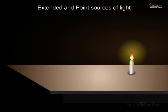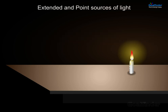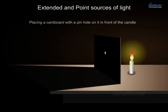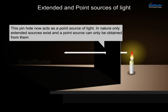Extended and point sources of light. The candle emits light in all directions; such a source of light is called an extended source of light. Placing a cardboard with a pinhole in front of the candle, this pinhole now acts as a point source of light. In nature only extended sources exist, and a point source can only be obtained from them.